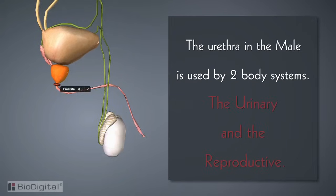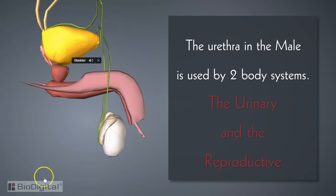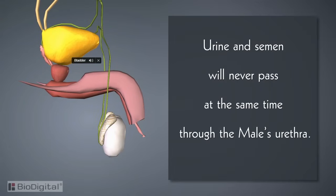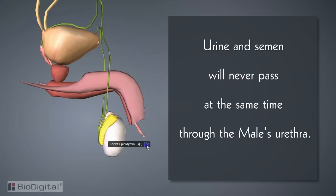The urethra in the male is used by two body systems: the urinary and the reproductive. In the urinary system, only urine passes through the urethra; in the reproductive system, only semen passes through. Urine and semen will never pass at the same time through the male's urethra.